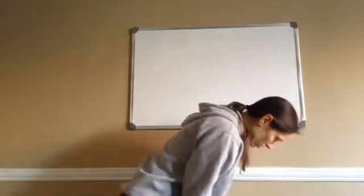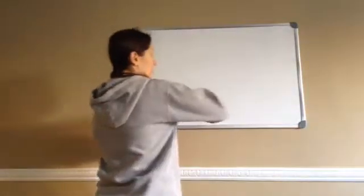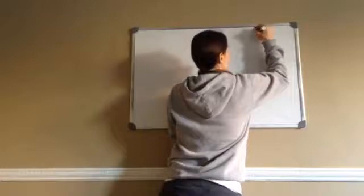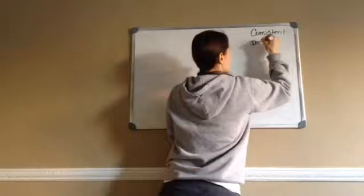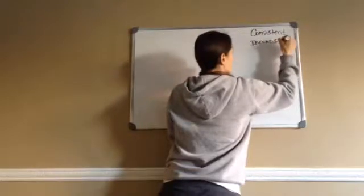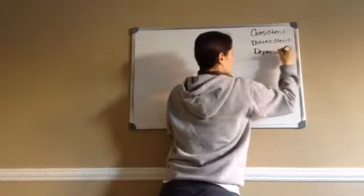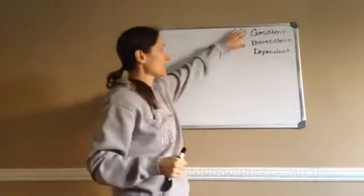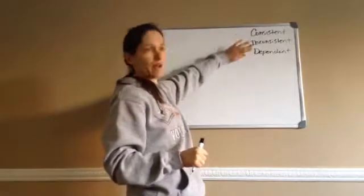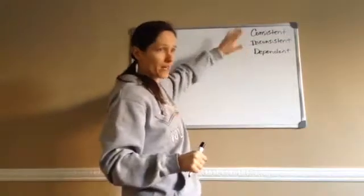I'm going to write them down. They are called consistent, inconsistent, and dependent. I usually don't teach this until the end, but I really think it's important to teach now. These are all graphing, just different — whether it's a consistent graph, an inconsistent graph, or a dependent graph. I'm going to be able to show you by looking at the graph what it is.